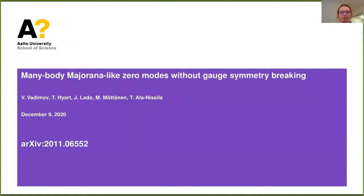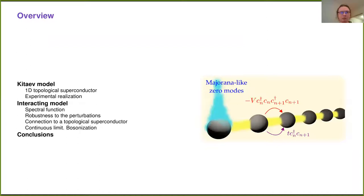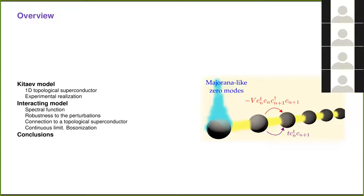The outline of my talk is the following. First, I introduce the Kitaev model of a 1D topological superconductor and briefly tell you about the experimental realization of topological superconductivity. Then I continue with our original result which involves a purely interacting quantum many-body system, and then move to conclusions.